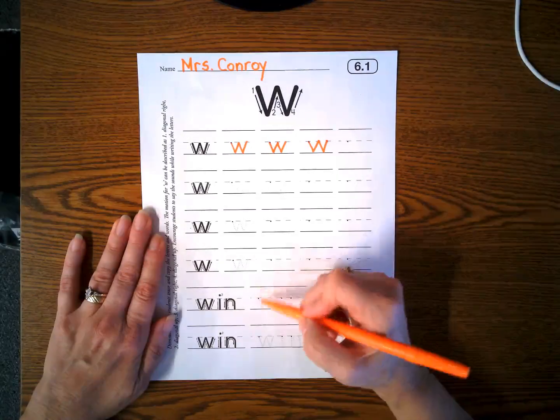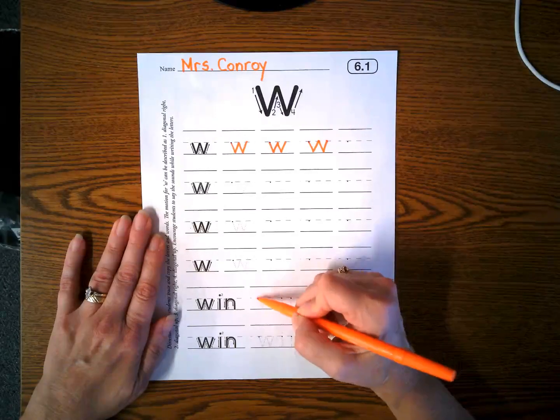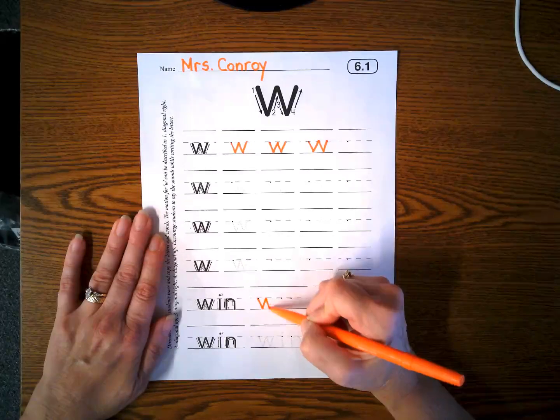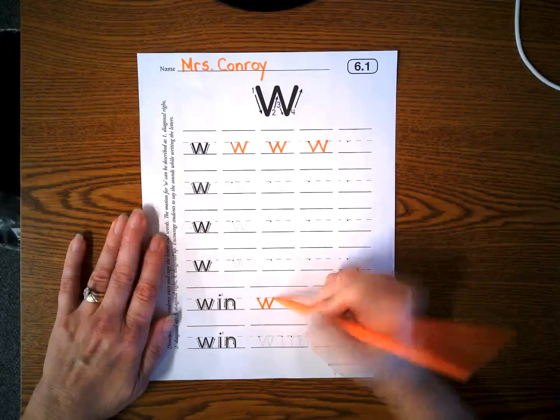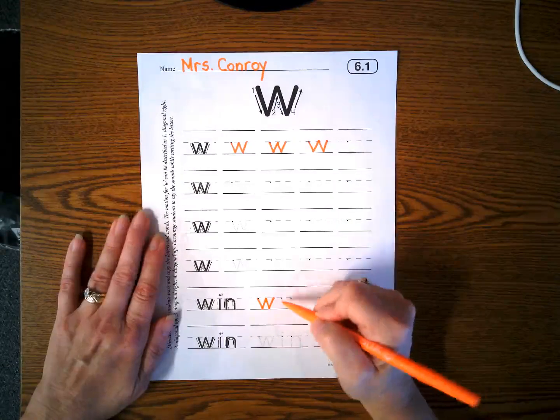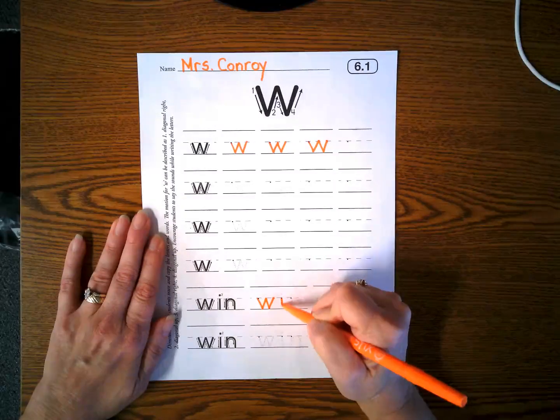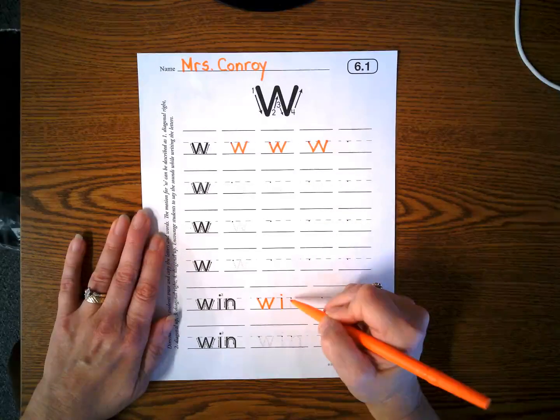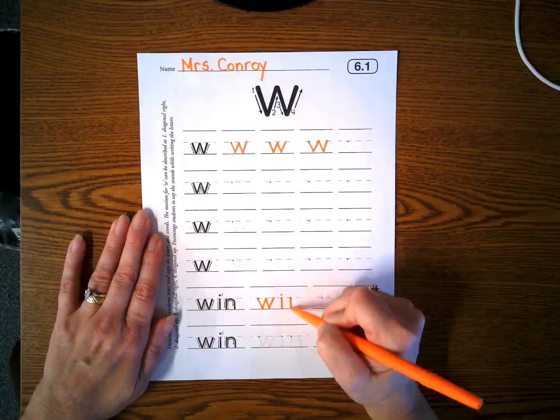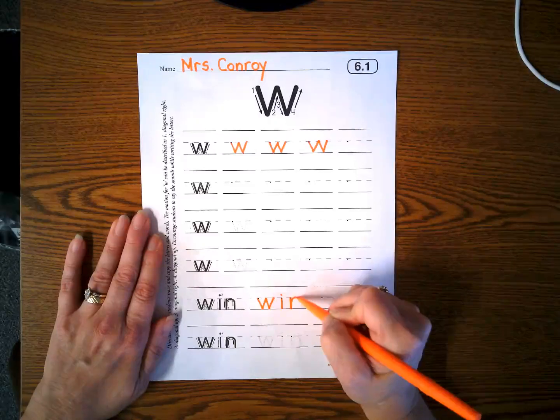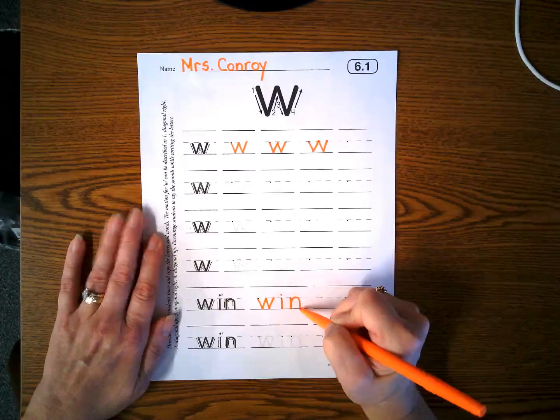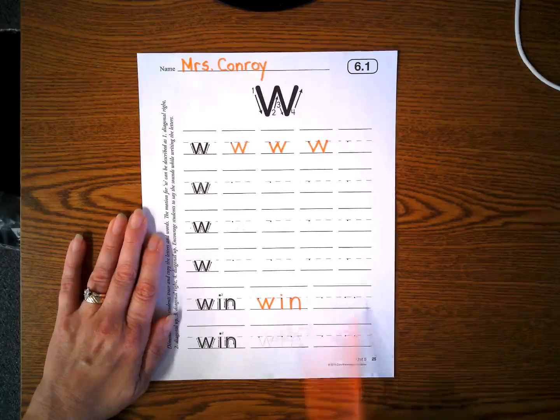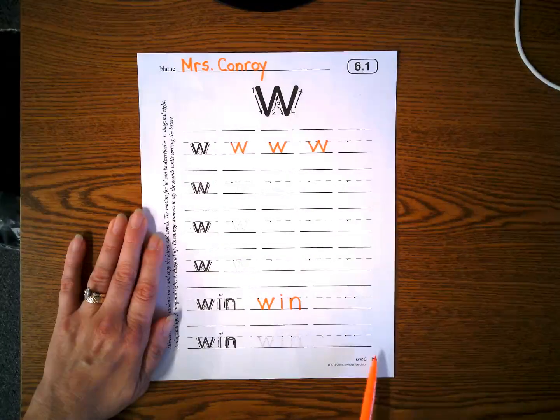Let's write the word win. Diagonal line down, up, down, and up. Lowercase i is lying down, and a dot. And an n is lying down, up, and make a hump. Please write the word win three more times.